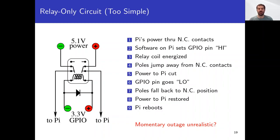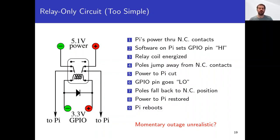Here is the circuit that is too simple — it is just a relay and the usual protection diode placed across the relay's coil. We route the Pi's power through the normally closed contacts, so when the coil isn't energized, the Pi receives power. Two of the Pi's GPIO pins, under software control, can energize the relay's coil, which causes the contacts to jump to the normally open position, cutting power to the Pi, which de-energizes the coil, which snaps the poles back to normally closed, restoring power. The momentary power interruption reliably triggers a reboot, but we worry that a split-second interruption might mask failures that a longer, more realistic power outage would expose.